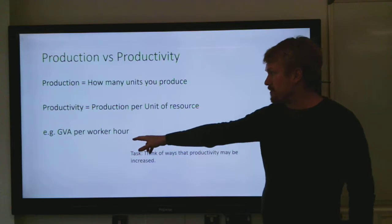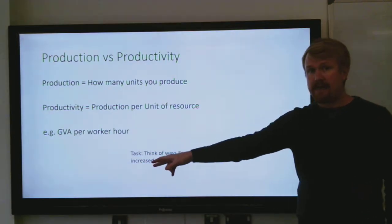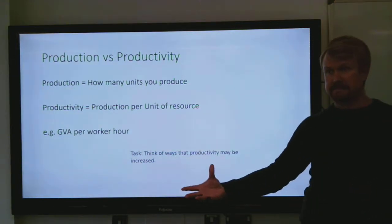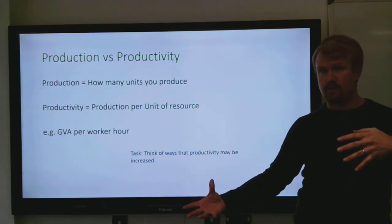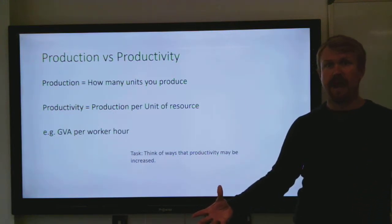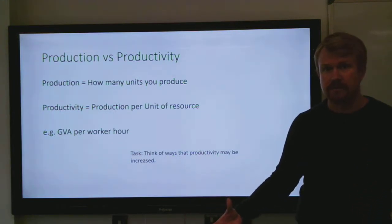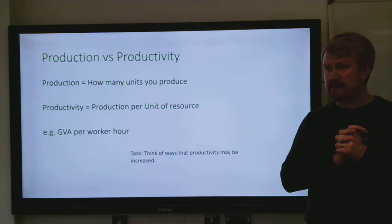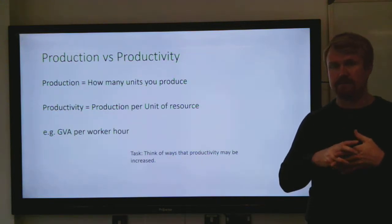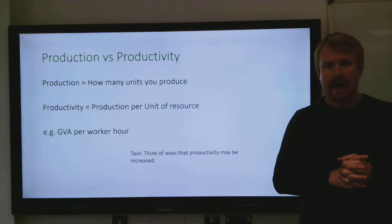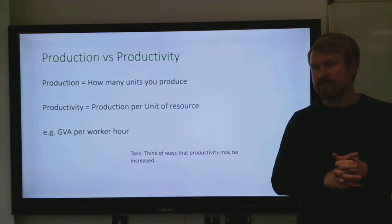If you look at GVA per worker hour, that is your output divided by your workers, divided by the number of hours that they're working. What that gives you is an idea for not only how many units per worker, but each hour that a worker is working, how much output are they producing.